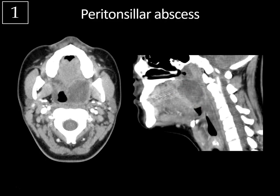This is a complication of tonsillitis with abscess formation in the peritonsillar space. It's actually usually located superior to the tonsil, between the tonsillar capsule and the superior pharyngeal constrictor muscle. You want to look for associated complications like mass effect against the airway and extension into other spaces, where you can get a retropharyngeal abscess — which we do not have here. You can also get complications of septic thrombophlebitis, with infected clot within the internal jugular vein.